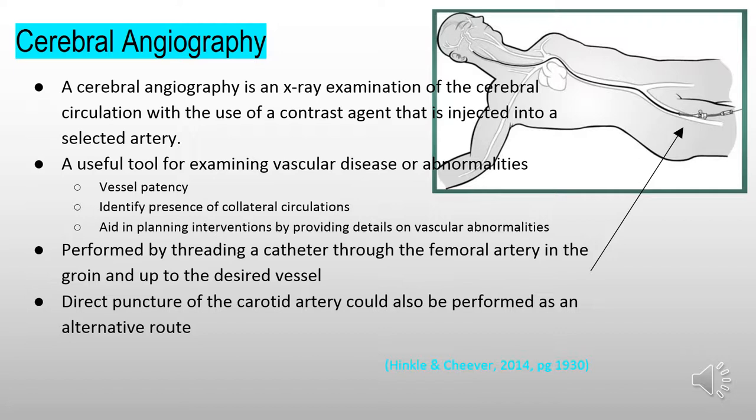A cerebral angiography is an X-ray examination of the cerebral circulation with the use of a contrast agent that is injected into a selected artery. It is a useful tool for examining vascular disease or abnormalities such as vessel patency, presence of collateral circulations, and aids in planning interventions by providing details on vascular abnormalities. A cerebral angiography is performed by threading a catheter through the femoral artery in the groin and up the desired vessel. Direct puncture of the carotid artery can also be performed as an alternative route.